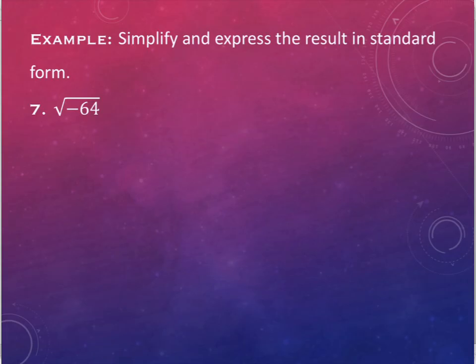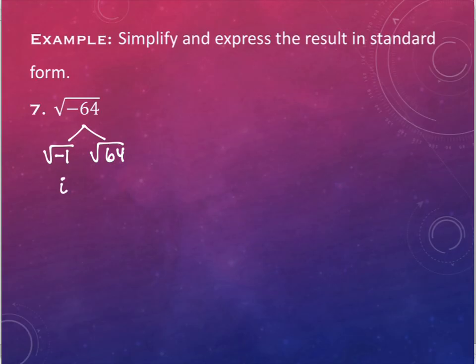Square root of negative 64. The negative means I'm going to separate it out. This is the square root of negative 1 times 64. What's the square root of negative 1? i. What's the square root of 64? 8. Now we're not going to write i8 — that's weird. We're going to write that as 8i. There are no radicals involved, so this is 8i.